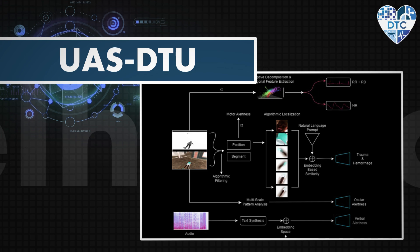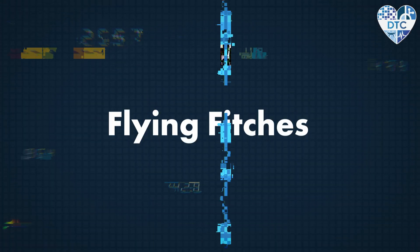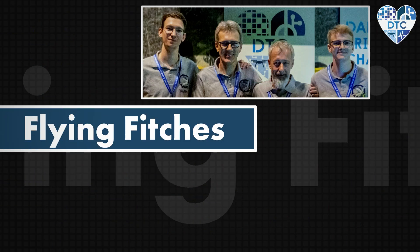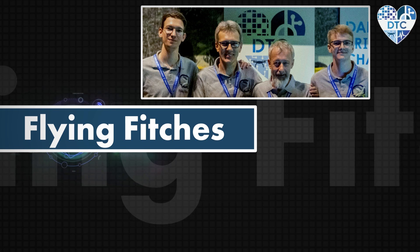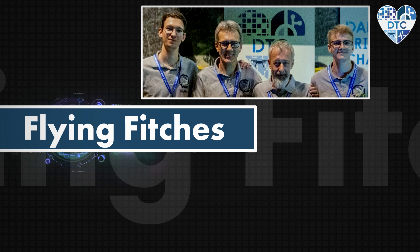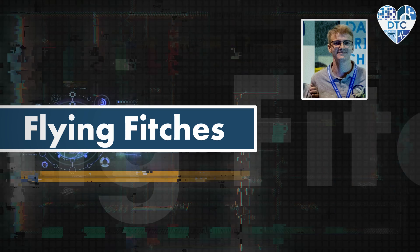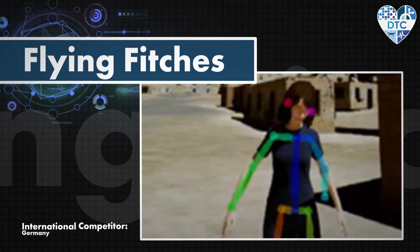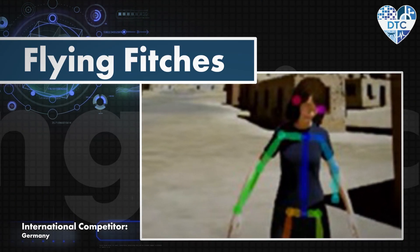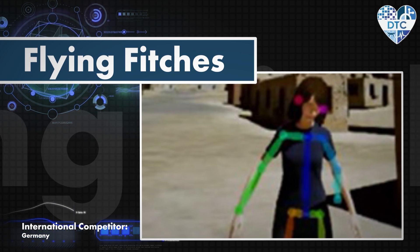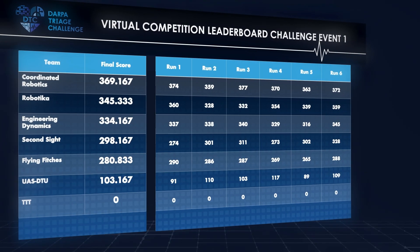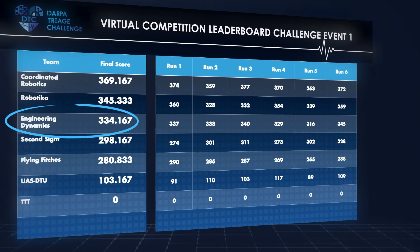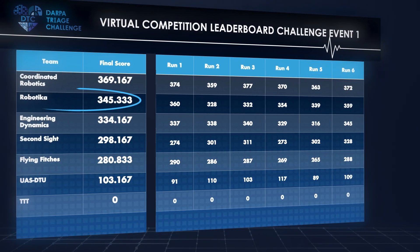Team Flying Fitches is made up of family members who were able to bring their skill sets together to complete a team. The qualification and technical background of the team members — engineers, mathematician, physicist, and pharmacist — is a good basis for this challenge. And now, here are the results from the virtual competition challenge event number one.